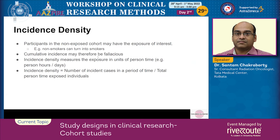Incidence density is a method used in cohort studies to quantify exposure that happens over a period of time and may not be uniform — for example, non-smokers can turn into smokers and vice versa. Incidence density measures exposure in units of person time: person hours or person days. It is defined as the number of incident cases over a period of time divided by the total person-time of exposed individuals, quantifying exposure in terms of person hours or person days.